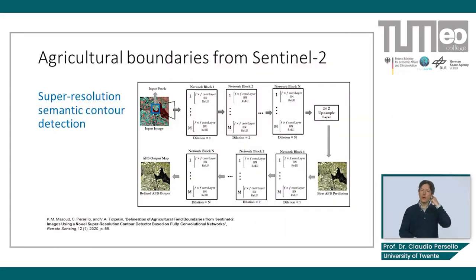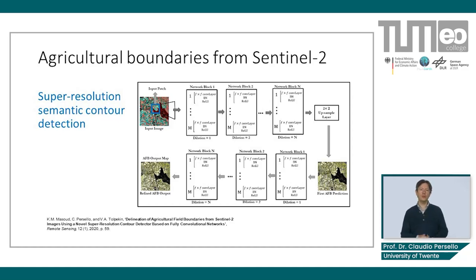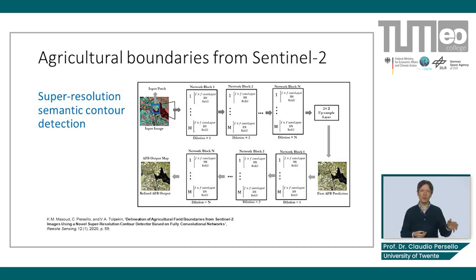Therefore, we wanted to use Sentinel-2 data instead, which thanks to the open data policy can be freely used for large-scale applications. However, the spatial resolution of 10 meters makes it difficult to delineate small fields. A master student, Kairia Massoud, a few years ago designed a super-resolution semantic contour detector to delineate field boundaries at a higher spatial resolution. She designed a fully convolutional network with a transposed convolutional layer to enhance the spatial resolution from 10 meters to 5 meters — a promising research direction that deserves further investigation.